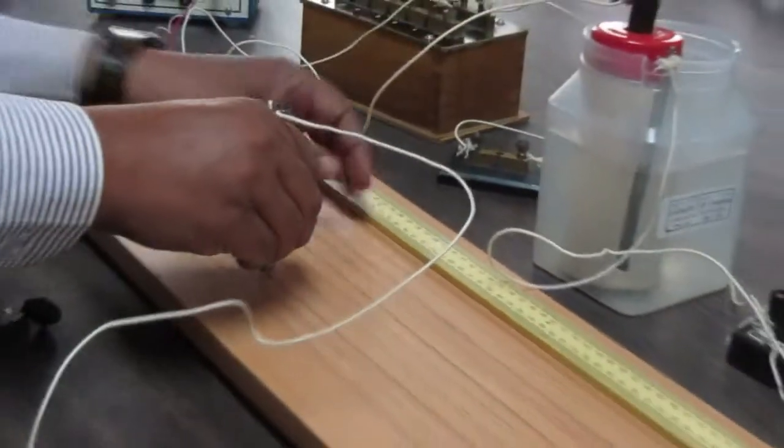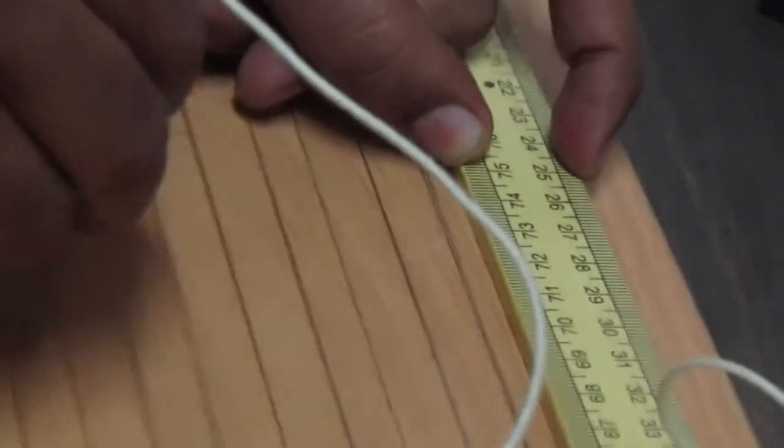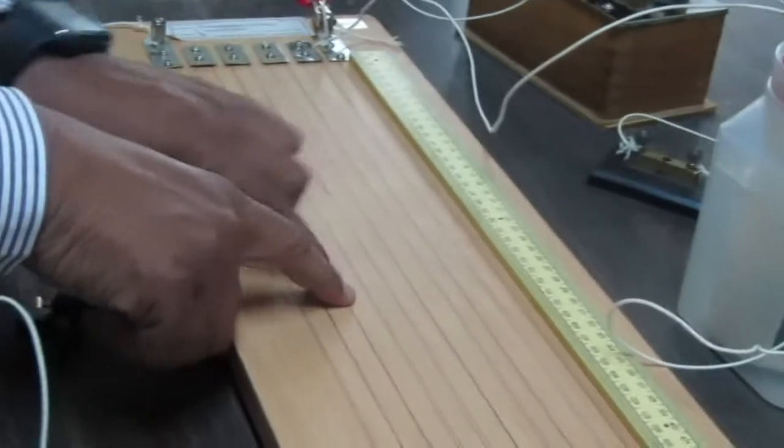Now, see where I have stopped the jockey - I will measure the length. For example, this is at 75 centimeters. Meanwhile, the circuit is open. Now I have to calculate the length.